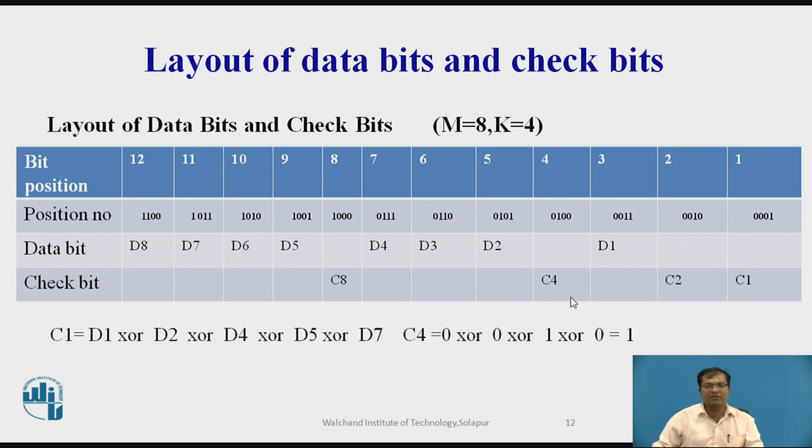Now the check bit c1 is calculated like this: d1 xor with d2 xor with d4 xor with d5 xor with d7. This is because c1 indicates that the right most bit position is 1. So out of these 12 values, the right most bit position which is 1 is taken for xor operation. So that's where it is d1, next d2, d4, d5, d7 like this. Similarly for others c2, c4 and c8.